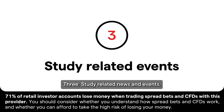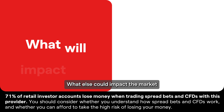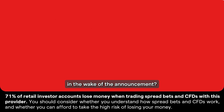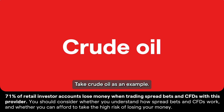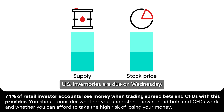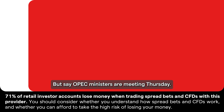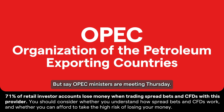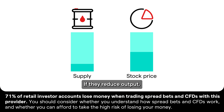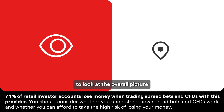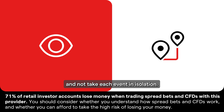3. Study related news and events. What else could impact the market in the wake of the announcement? Take crude oil as an example. US inventories are due on Wednesday — if there's an oversupply, the price should drop. But say OPEC ministers are meeting Thursday; if they reduce output, the price could rise. It's essential to look at the overall picture and not take each event in isolation.